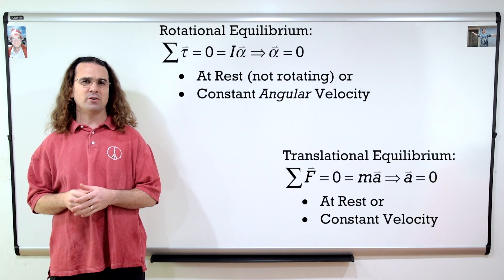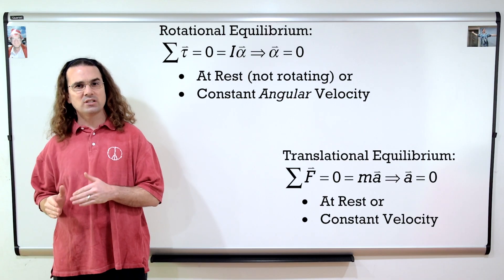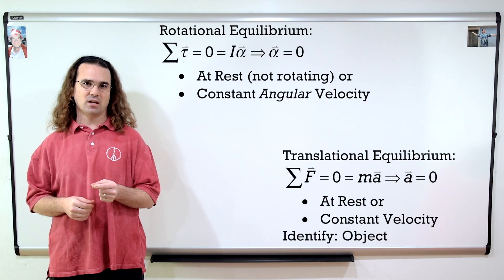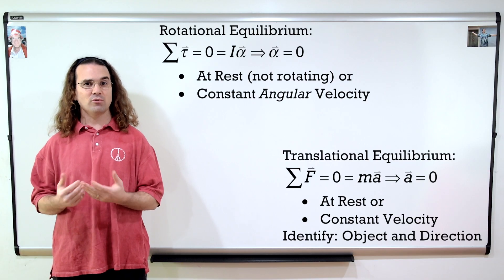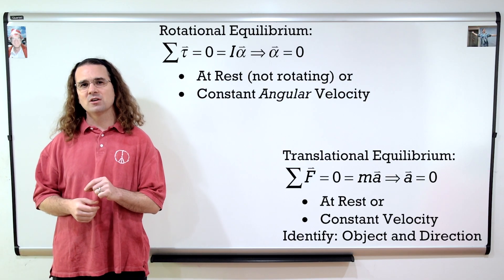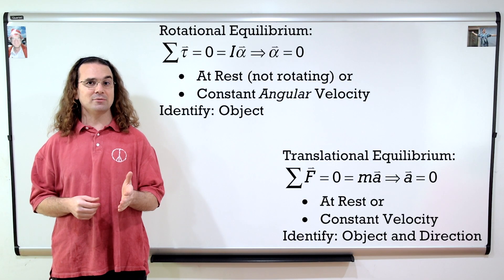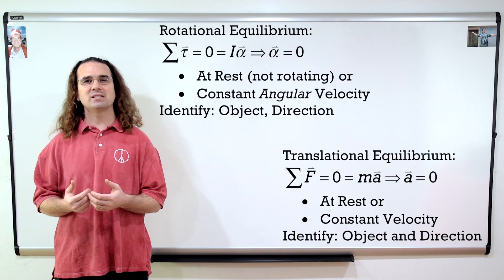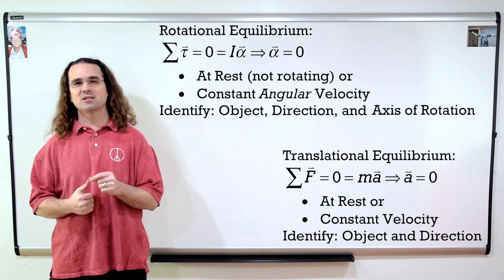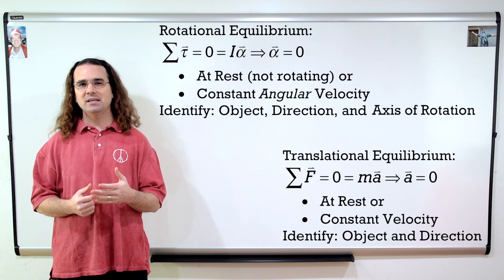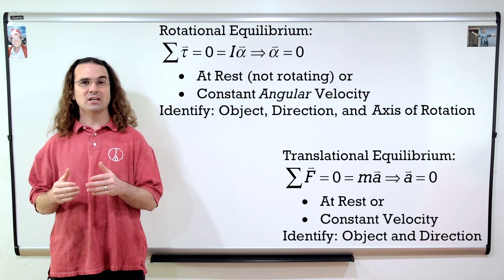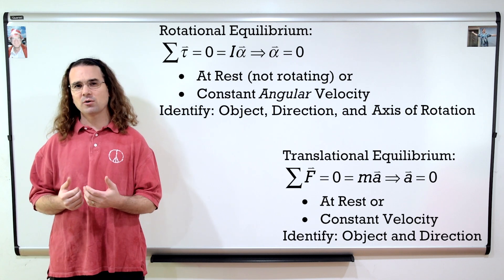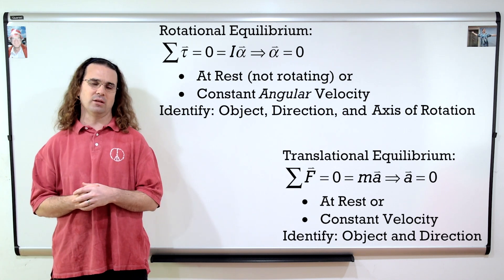Now, I want to take a moment to review that when we sum the forces, we need to identify the object or objects we are summing the forces on, and the direction in which we are summing the forces. And when we sum the torques, we need to identify not only the object or objects and the direction of positive torque, but we also need to identify the axis of rotation. Please remember to identify those when using net force equals zero for translational equilibrium, and net torque equals zero for rotational equilibrium.